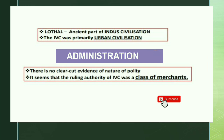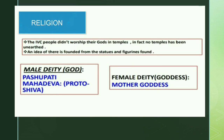Regarding administration, there is no clear-cut evidence of the nature of governance. It seems that the ruling authority of the Indus Valley Civilization was a class of merchants. Regarding religion, the Indus Valley people did not worship their gods in temples — in fact, no temple has been found.